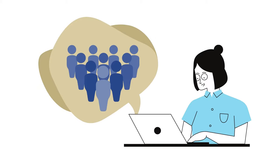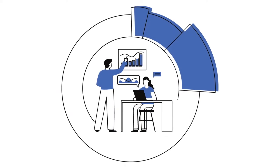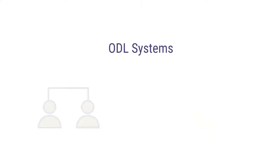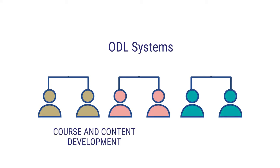Although distance is a defining factor in the ODL system, it also allows face-to-face interactions when they are inevitably required. For example, in situations when students need guidance, they can approach the concerned study centers, and also in scenarios when students need to use facilities like laboratory, library, etc. The staff is often divided and specialized for particular areas in large ODL systems. There are different teams who work on areas like course and content development, assessment and evaluation, etc.